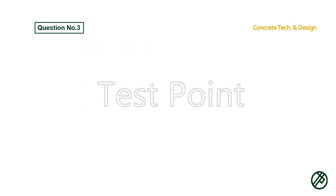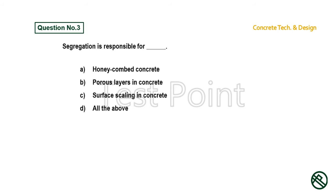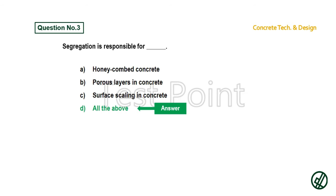Question number 3: Segregation is responsible for — Option A: Honey combed concrete. Option B: Porous layers in concrete. Option C: Surface scaling in concrete. Option D: All the above. Answer is Option D: All the above.